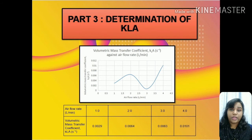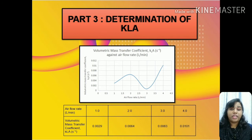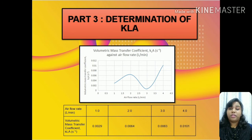From that we obtain the graph of volumetric mass transfer coefficient against the airflow rate. From the results obtained, it is clearly obvious that the airflow rate of 4 liters per minute has the highest mass transfer coefficient value. This is analyzed from all the graphs obtained, and from there we are able to determine that KLA is highest at the highest available flow rate.